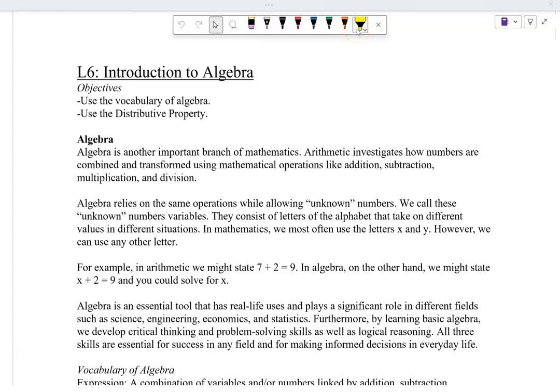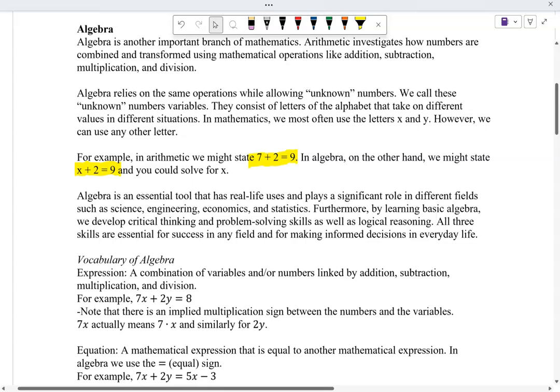With arithmetic, we're obviously manipulating numbers: addition, subtraction, multiplication, division, all that. But now we're going to work with some unknowns. For example, with arithmetic we'd have 7 plus 2 is 9. Algebra, on the other hand, might say solve for x if you have x plus 2 equals 9. And then you've got to use your rules for algebra to do that.